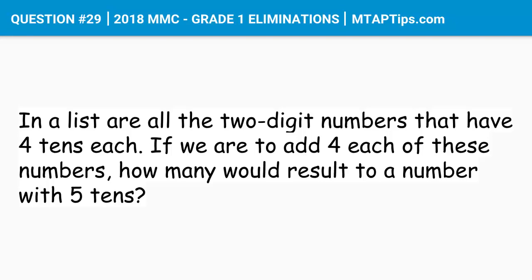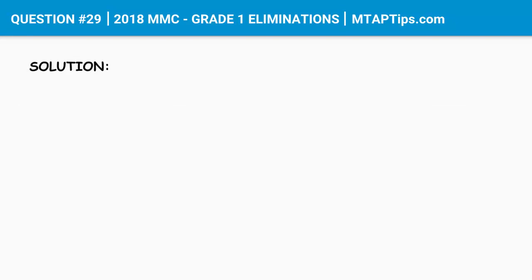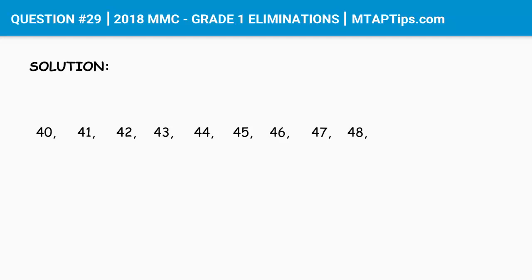First, let's think about what are those numbers with 4 tens. We should start with 40, then 41, 42, 43, 44, 45, 46, 47, 48, and 49.